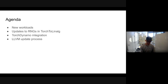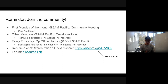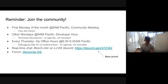A few reminders: our community meeting is the first Monday of every month at 9 a.m. Pacific. The goal is to give the community a high-level overview of what has changed in the last month in TorchMLIR. All other Mondays at the same time we have our developer hour, which is focused on technical discussions — there is no agenda and it's not recorded. The developer hour is a great place to come and ask questions or bring up new ideas for features.